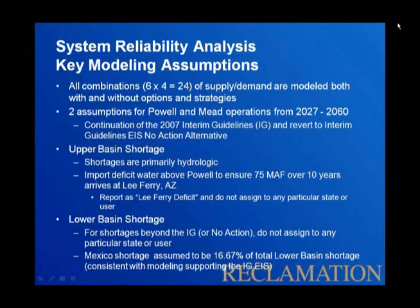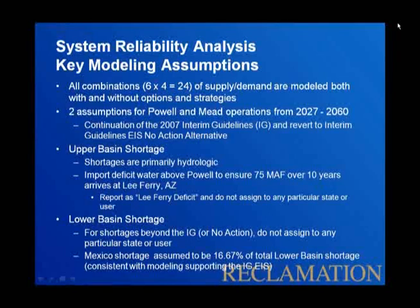We inject water above Lake Powell and then release it from Lake Powell to make sure that we meet that 75 million acre feet threshold. In the lower basin, shortages are a little bit different. Any time there's a shortage beyond what's specified in the interim guidelines or the new action alternative, we don't assign that shortage to any particular state. Currently the interim guidelines specify shortages for the lower basin states any time Lake Mead is below 1075. However, in certain cases Lake Mead is so empty that it can't meet the demands below it, and so these shortages aren't assigned to any individual state or user.